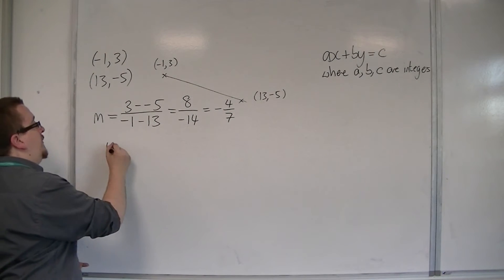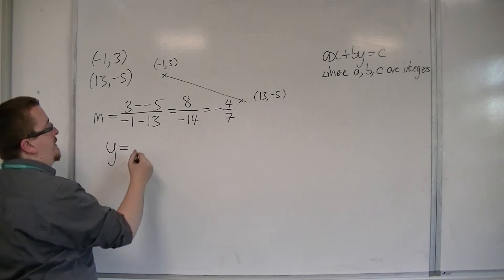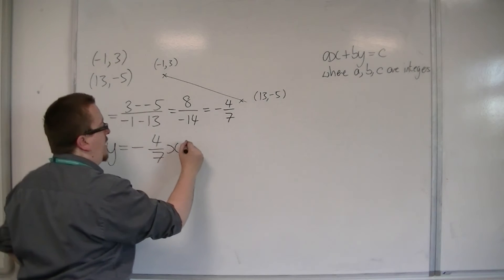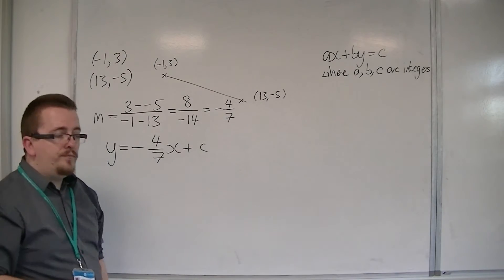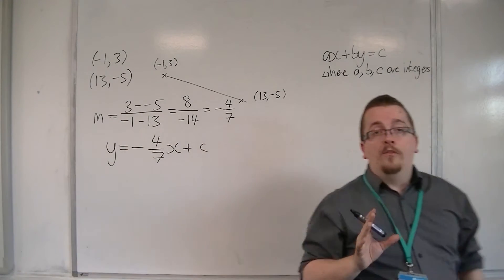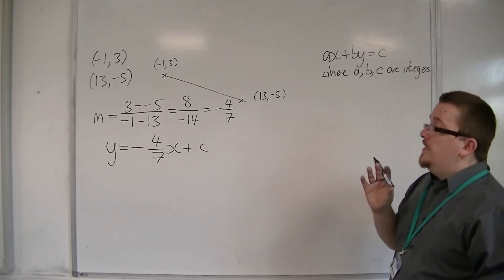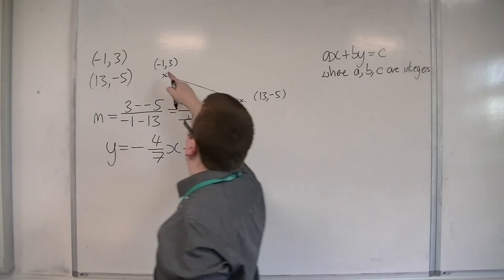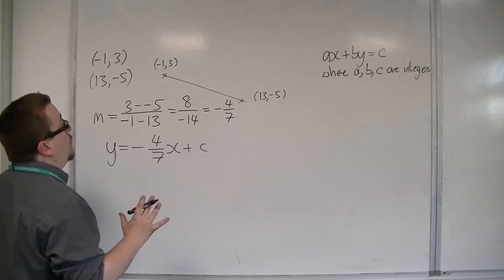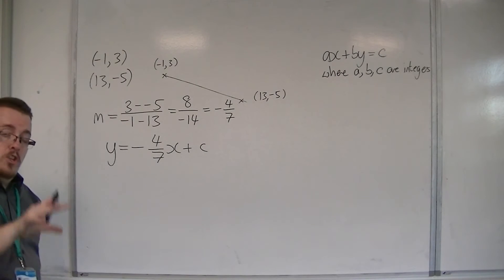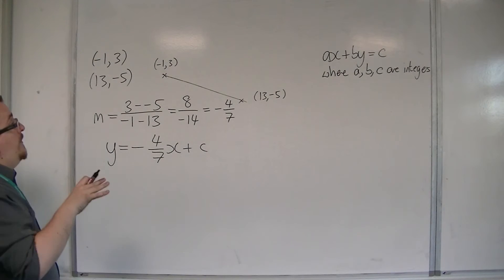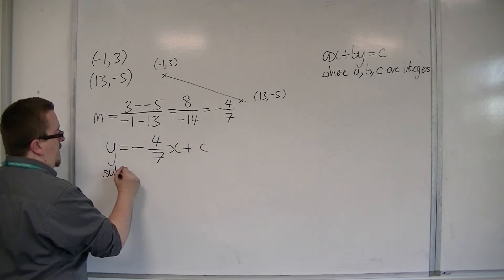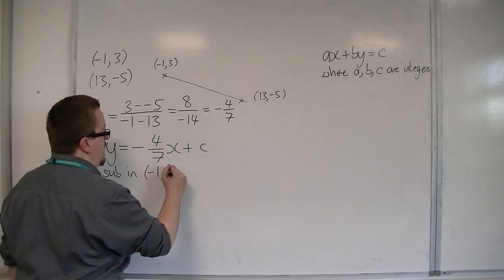We can already say that the equation of the line is y is equal to minus 4 sevenths x plus c. I now need to work out what the value of c is. I can do that by substituting in one of the two coordinates — it doesn't matter which. I'm going to choose the easiest one to work with, which is minus 1, 3. So sub in minus 1, 3.